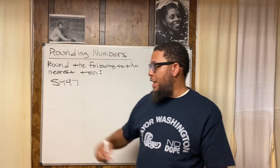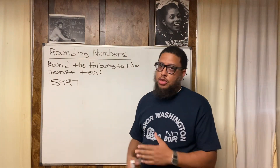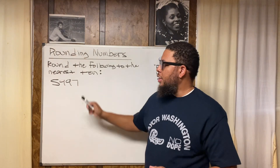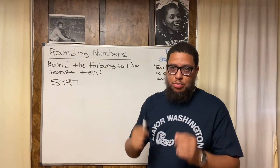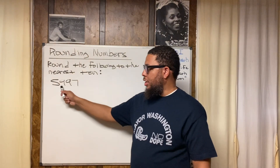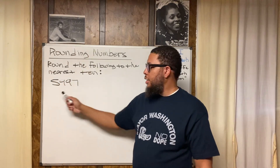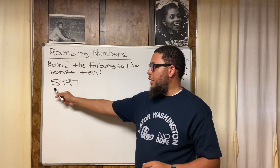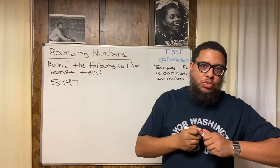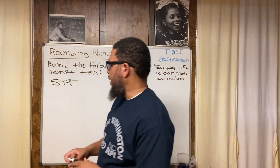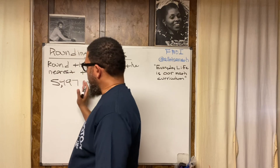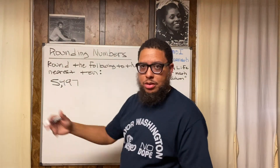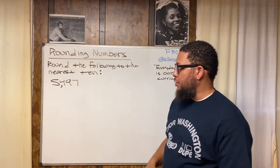The number we're dealing with is 5,997. We should first make sure we can read that number properly. Starting from the far right — each of these are digits which comprise a number. Seven is in the ones place, nine is in the tens place, this other nine is in the hundreds place, and the five is in the thousands place. Sometimes when you see numbers written there might be a comma after the third digit going from left to right.